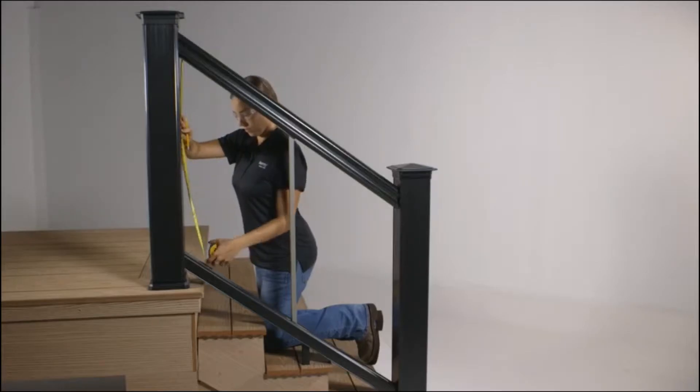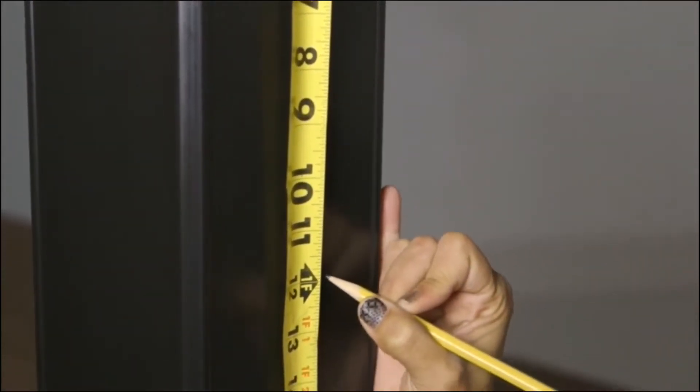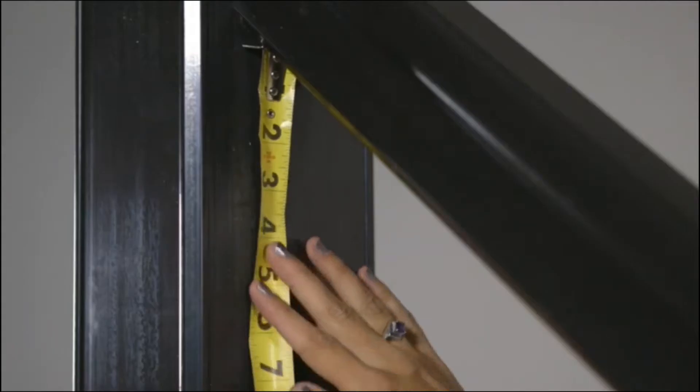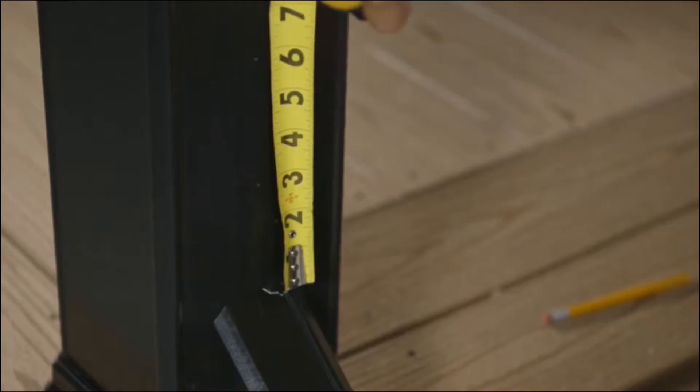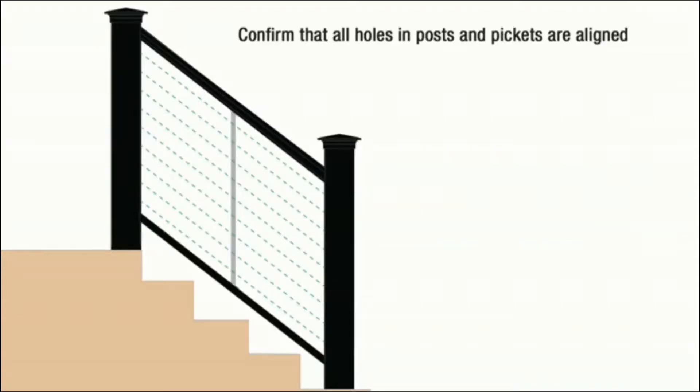First, measure and mark all drill holes along the center line on the inside faces of the termination posts. Cable should be spaced no more than three inches apart. Make sure that the top and bottom cables are no more than three inches from the top and bottom rails. Confirm that all holes and posts and pickets are aligned so that the cable will run straight.